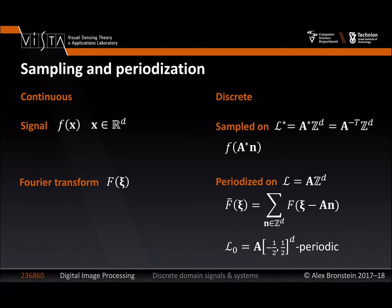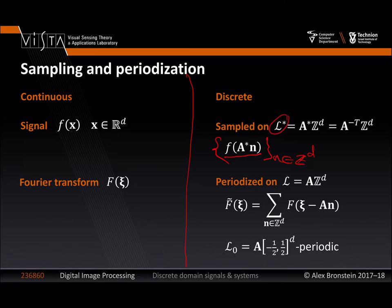Let's start with our point of departure: the two worlds we have. In the continuous domain, we had a signal which was a scalar-valued function of a d-dimensional continuous argument x in R^d. We had a Fourier transform denoted by capital F of psi, where psi was the spatial frequency, a d-dimensional real argument. Now in the discrete domain, instead of having a continuous signal, we sampled it on the lattice L-star, and as a result obtained a discrete collection of samples. The domain is infinite but countable — it is a discrete collection of samples rather than a continuous one.